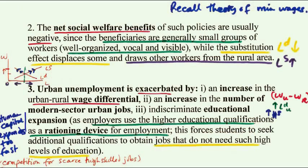The net social welfare benefits of this policy are usually negative. Economists, pretty much to a person, believe that free markets will create efficient outcomes, and if you do anything to move away from free markets, you will be reducing the net social welfare in society. The net social welfare benefits of factor price distortions are usually negative, since the beneficiaries are generally small groups of well-organized workers, while the substitution effect displaces some and draws other workers from the rural area.